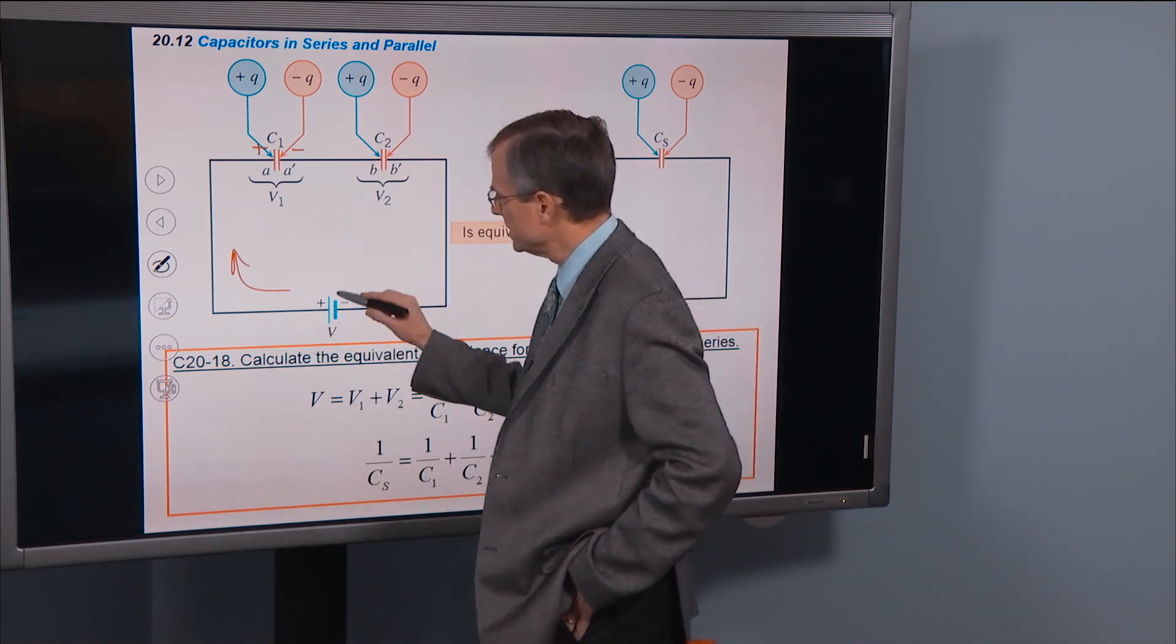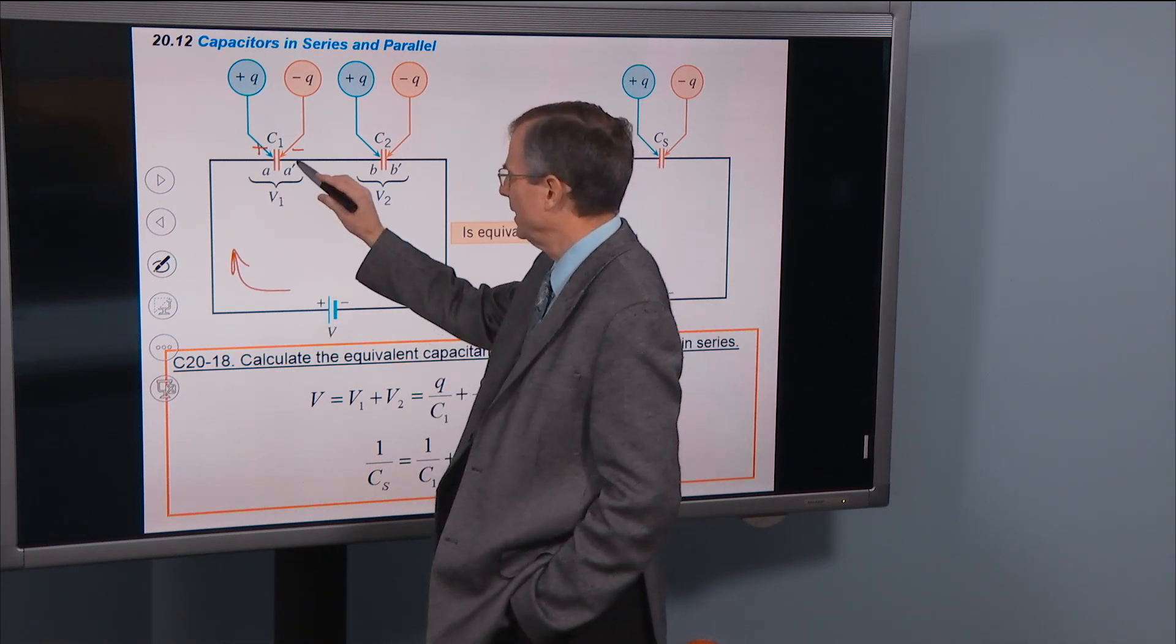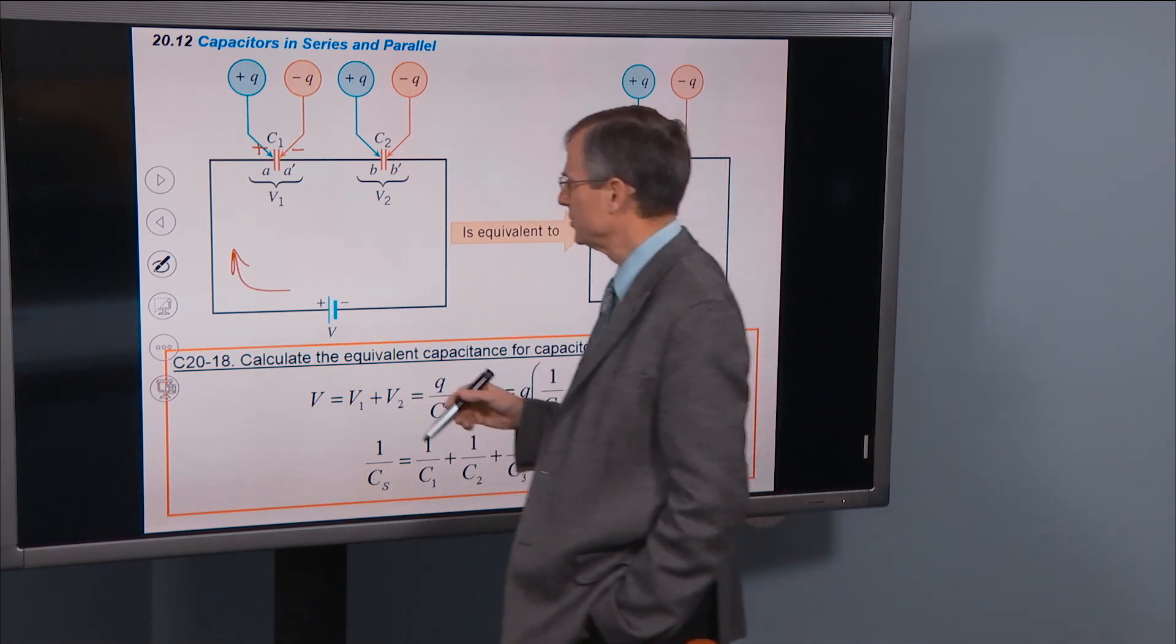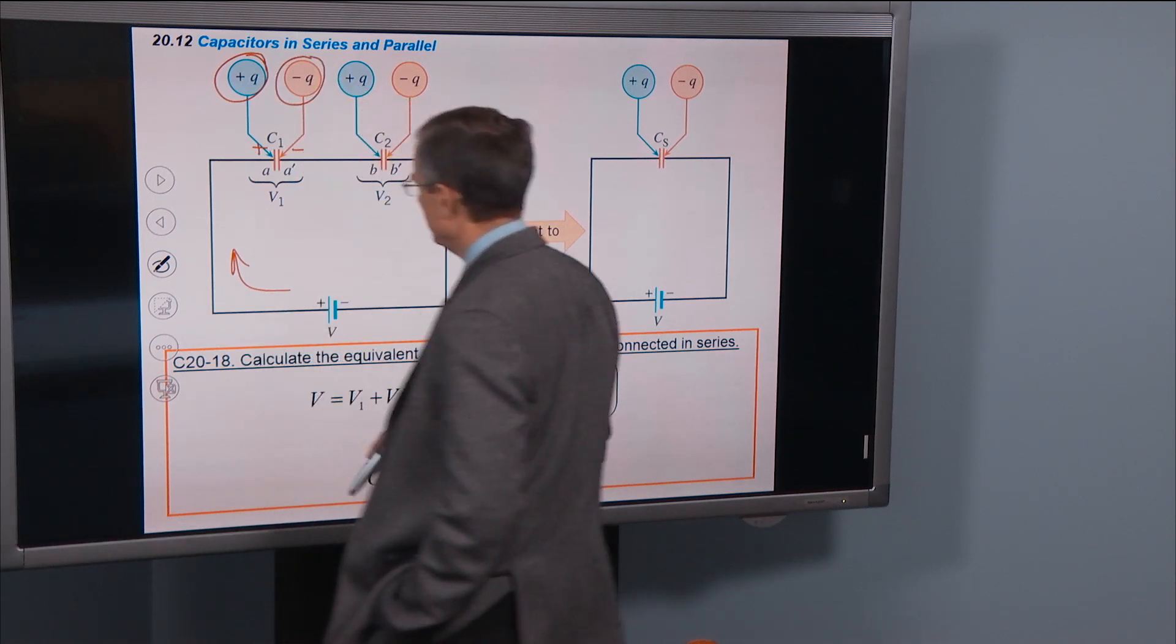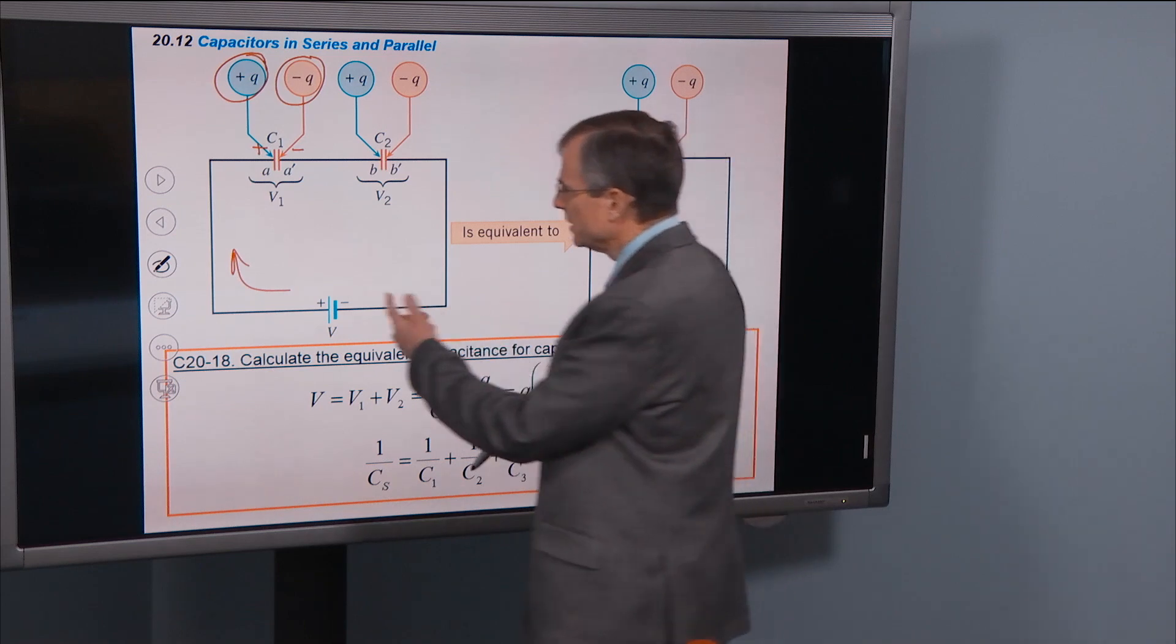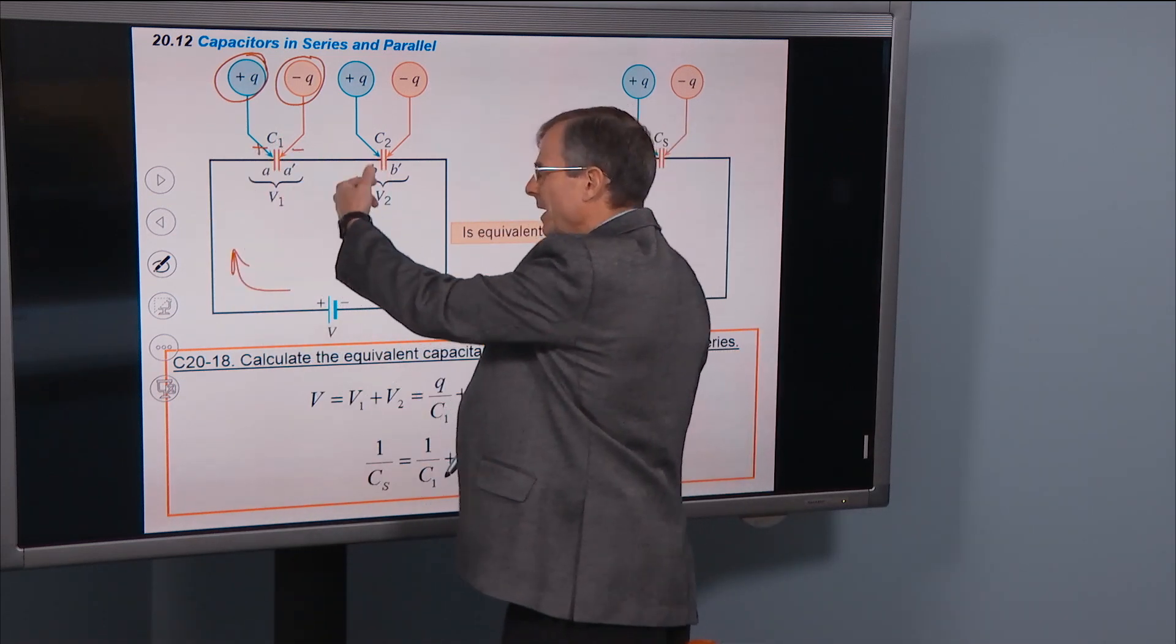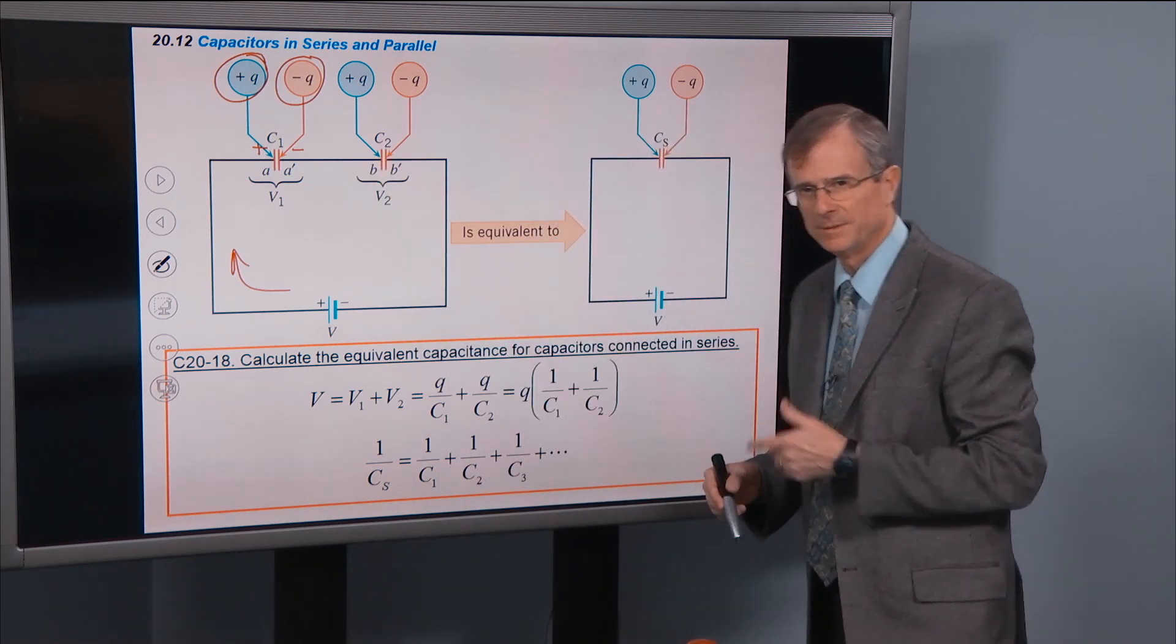So what happens is these positive charges accumulate on the left side of the capacitor and the negative charges accumulate on the right side of the capacitor. The charge of the capacitor is plus q on the left side, minus q on the right side. But the current coming into this capacitor must be the same as the current leaving the other side of the capacitor and entering the second capacitor if they're in series like this.